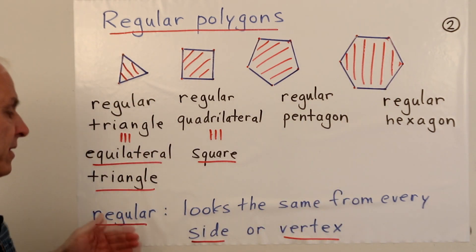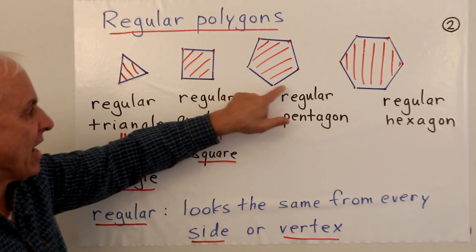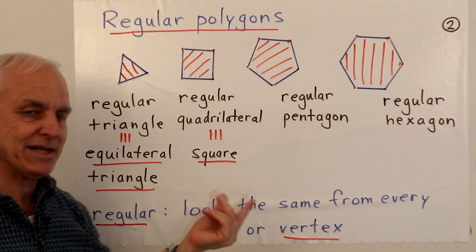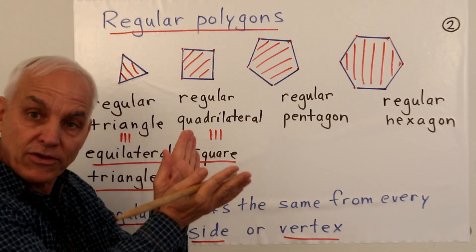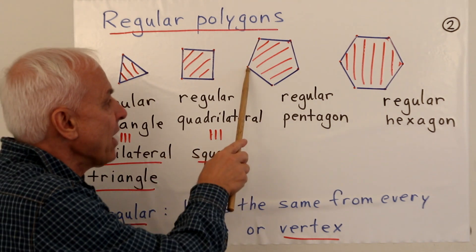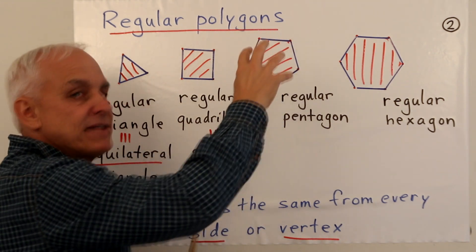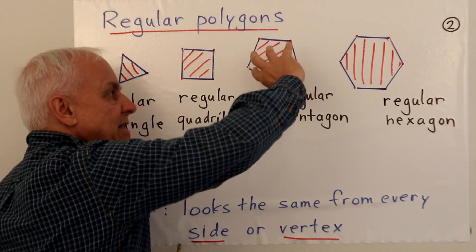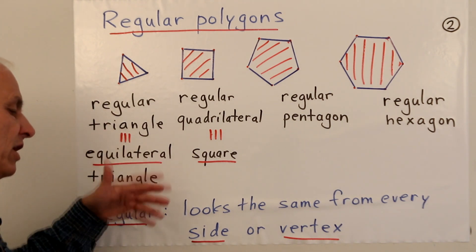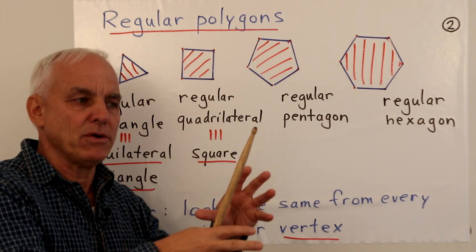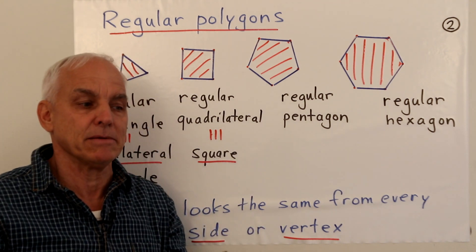These shapes are regular in a very strong sense: it's not just that the sides are all equal, but also the vertices are all equal. So if you're looking at this pentagon from one corner or vertex, it looks the same as from any other corner. Another way of saying that is we could pick this thing up, move it around, twist it, and lay it back down again and it would occupy the same space as before. We'll need to talk more about those symmetries — moving objects around is an important notion in geometry.